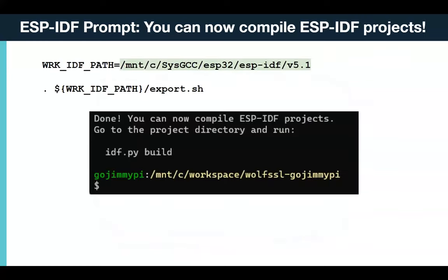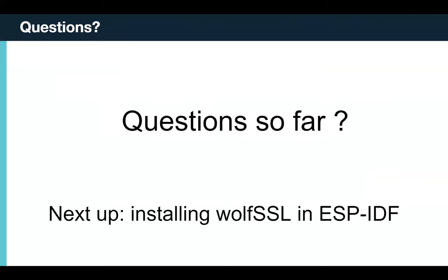So we talked about setting up the ESP-IDF, a couple of boards, and JTAG. Typically what I do is set up an environment variable pointing to the ESP-IDF version — in this case 5.1. The instructions tell you to type a dot followed by the path, or CD into the directory and run export. The bottom line is you run the export script, and once that's done you can compile ESP-IDF projects. You're ready to go. That's the first part of our webinar — I'll pause here in case anybody has questions.